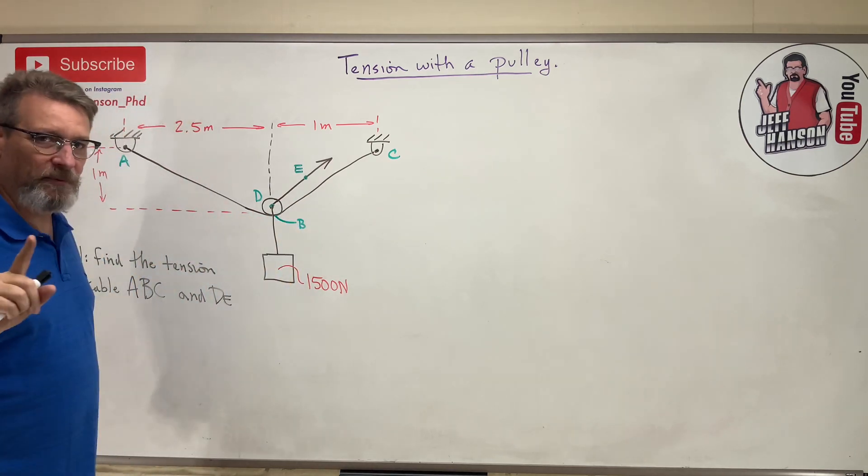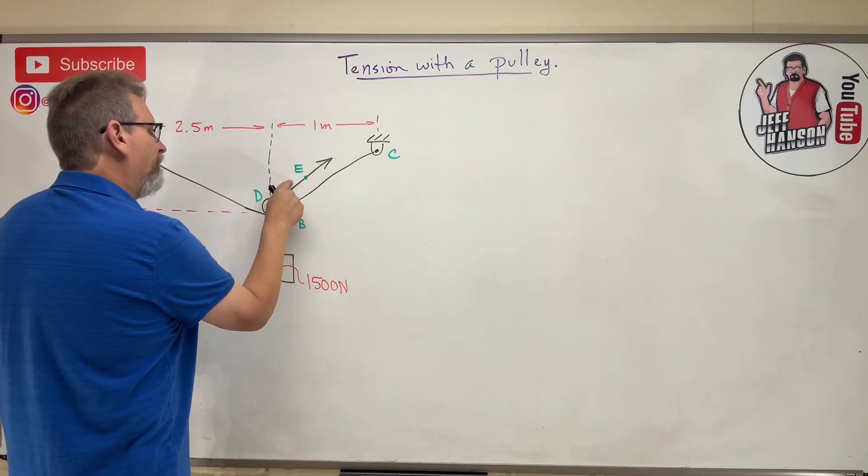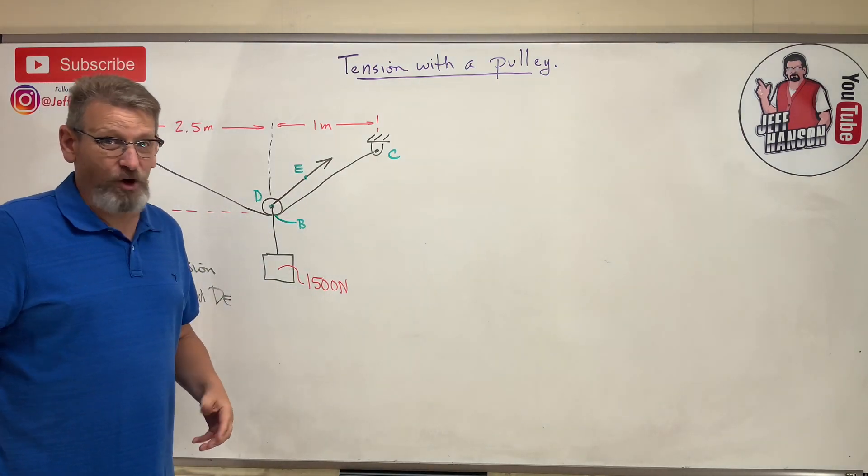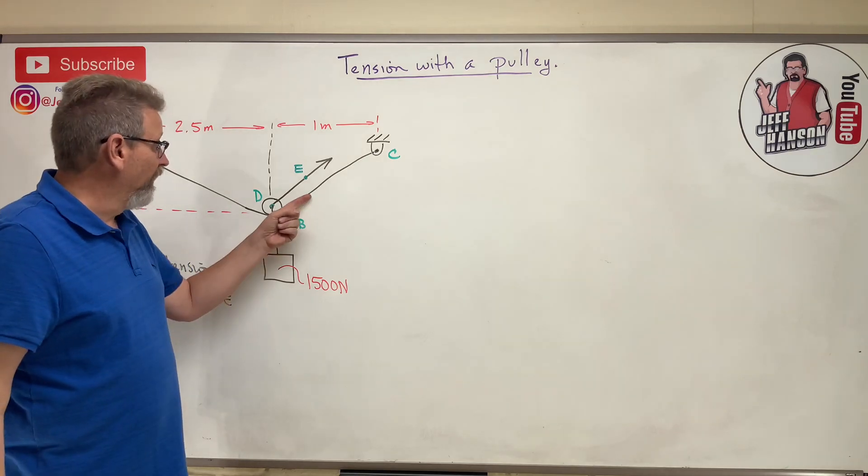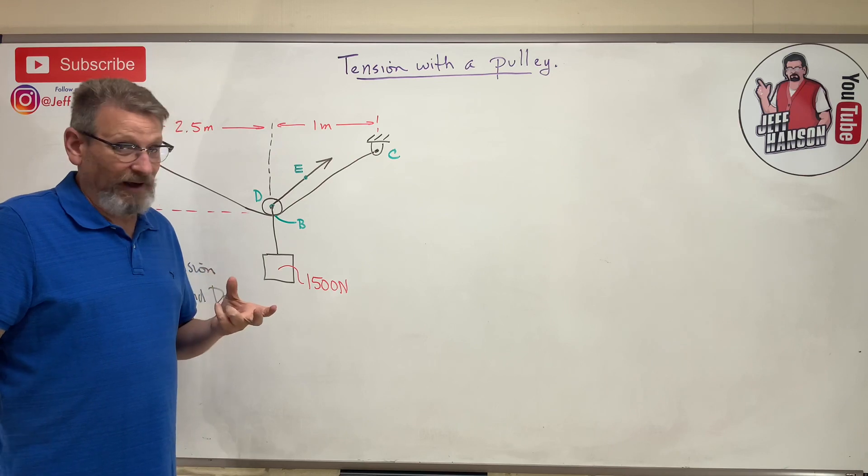That messes a lot of people up on this problem because they're like, "Oh well, there's gonna be one rope there, one rope there, one rope there, and then a rope pulling it down." Well that's too many unknowns to solve for. I've got unknown rope, unknown rope, unknown rope, but I only got two equations - I'm gonna be in trouble.